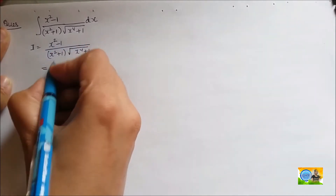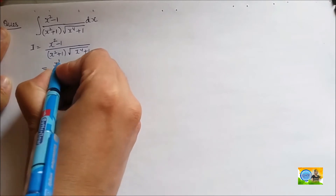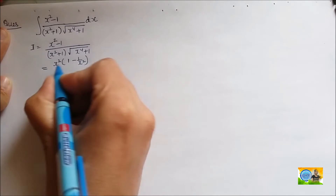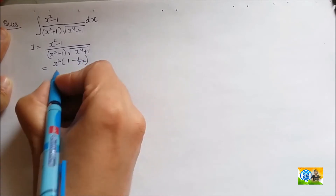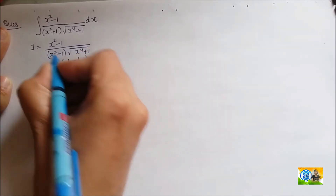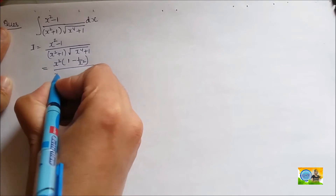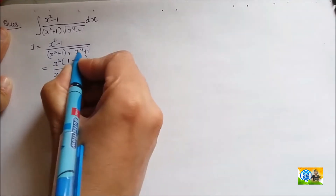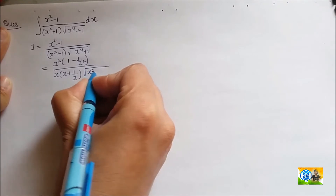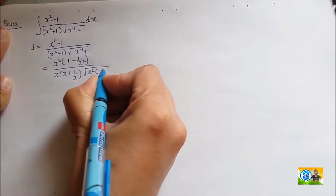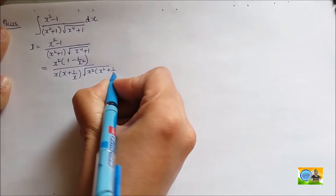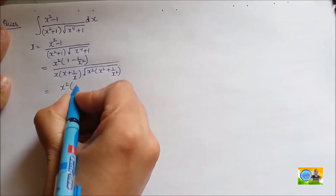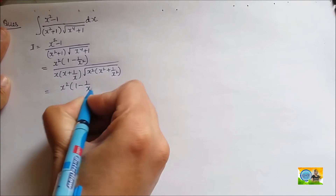From the numerator, I will be taking x² outside. So this will be x²(1 - 1/x²). From the denominator, I will take x outside, giving x(x + 1/x). From the expression under the root, I take x² common, giving x²(x² + 1/x²).